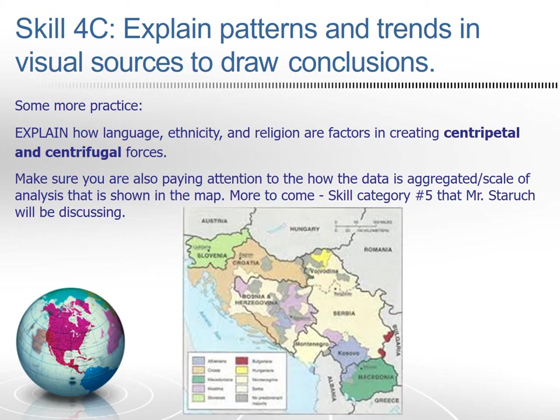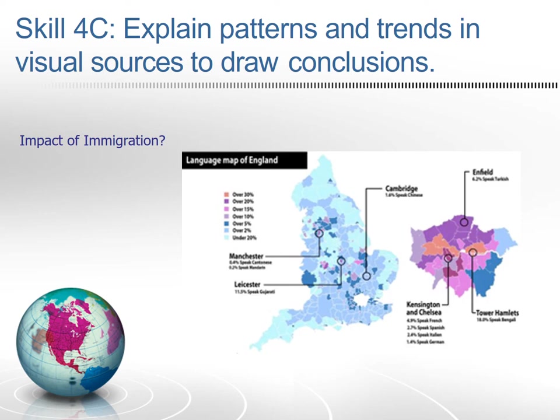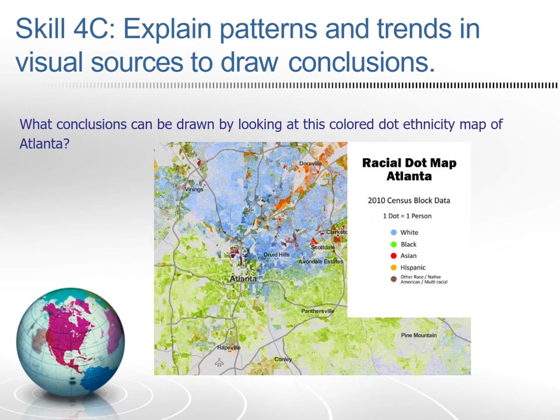Here's another example of having yourself and your students explain patterns and trends in visual sources: what is the impact of immigration from looking at this map? This is a language map of England showing what the majority languages are — the percentage of different non-English languages — in certain areas of England. It's a local scale of analysis choropleth map. Here's another one related to Atlanta: what conclusions can you draw by looking at this colored dot ethnicity map of Atlanta, showing areas that are predominantly white, black, Asian, Hispanic, and other?